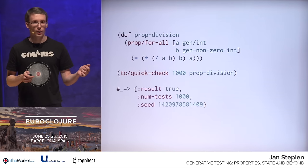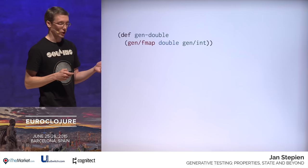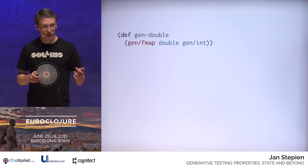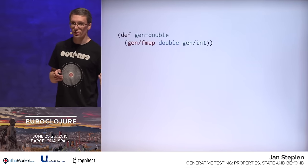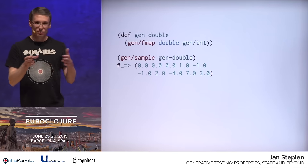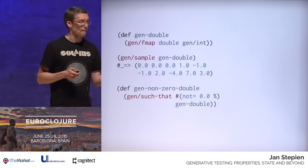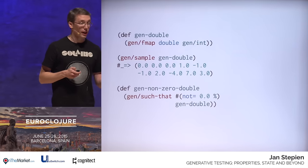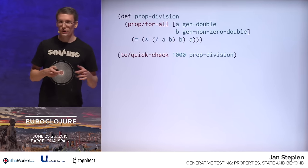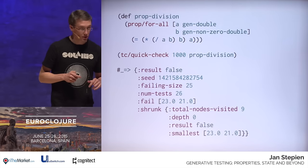The version of TestCheck I used didn't have a built-in generator of doubles, so let's write one on our own. `fmap` is something like map but for generators — here we are mapping the `double` function over the generator of integers. As the sample function will show us, we get integers mapped into doubles. Once again we have to exclude zeros, so we use `such-that` to exclude all zeros, giving us a new generator of doubles excluding zeros. We plug both generators into our test case, run 1,000 tests, and the result is false.